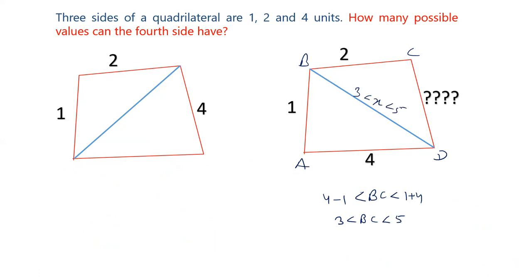BC length comes between 3 and 5, so BC can be 3 or 5. Now for CD, taking these two extreme cases: CD is more than BD minus BC and less than BD plus BC. BD is between 3 and 5, so the length of CD can be more than 1 and less than 7.